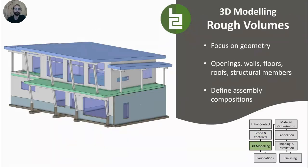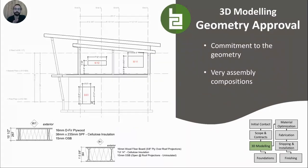The first step of prefabrication after contracts are signed is to model the house. The first step in 3D modeling is just roughing — installing rough volumes of the building. The objective here is simply to fix the geometry: every opening, every wall location, every floor elevation, roof overhangs, structural members — everything is drawn here in rough volume with no detail. It's a communication tool to issue what we call a geometry approval, which is a set of 2D drawings based on the rough 3D volumes.